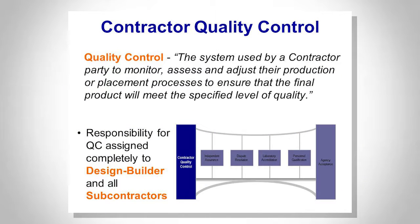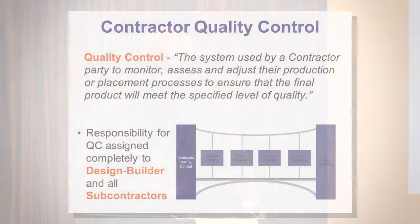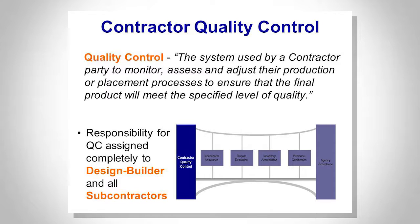As far as contractor quality control, it's the system used by a contractor to monitor, assess, and adjust their production. The contractor is already in control of their own destiny for their product. As you go out and validate them, make sure they're doing it on their own responsibility and not shifting it to you. This extends down to their subcontractors, vendors, and manufacturers, with some level of periodic, timely sampling and testing.